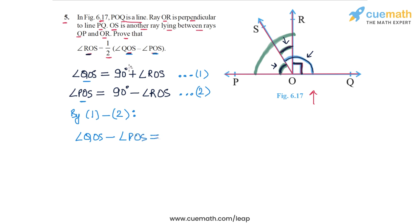On the right side, the 90 degrees cancel out, and I have angle ROS minus minus angle ROS. This equals 2 times angle ROS.